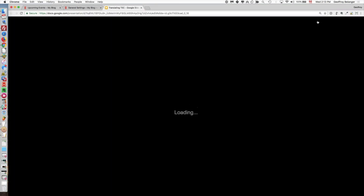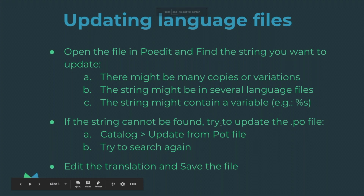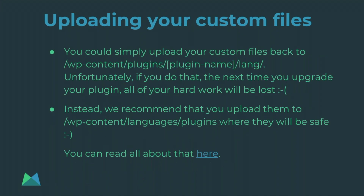We just saved it and accomplished our goal. Next, we need to upload the custom file. Once you've changed what you're looking for, you take the file and bring it back — you could just put it under wp-content/plugins/[plugin-name]/lang, but if you do that the next time you upgrade your plugin all of your hard work will be lost. Therefore, what we recommend is that you upload these custom language files under another folder specifically meant for that purpose, which is wp-content/languages/plugins.